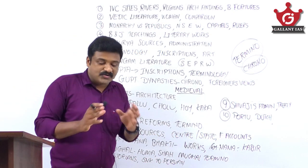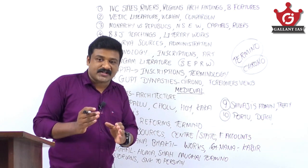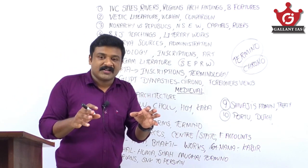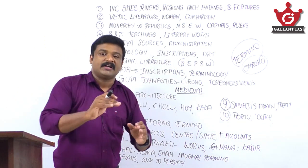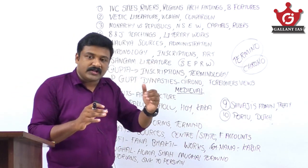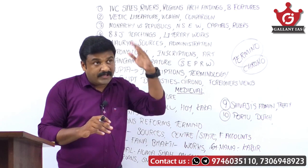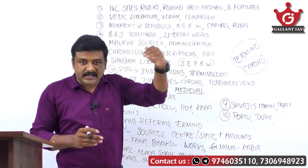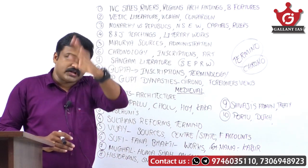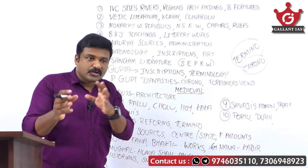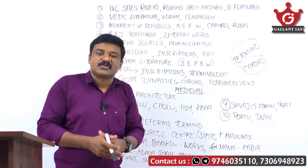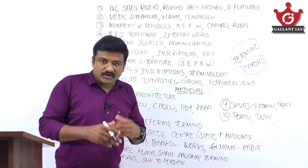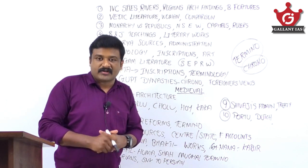Next, study Mahajanapadas. Know the classification into monarchy states and republican states, and their geographical locations. Practice with a map — identify the southernmost, northernmost, westernmost, and easternmost Mahajanapadas. Know their arrangement from north to east, north to west, and north to south. The location of the 16 Mahajanapadas and their capitals, ruling dynasties, rulers, and cultural contributions are all important.